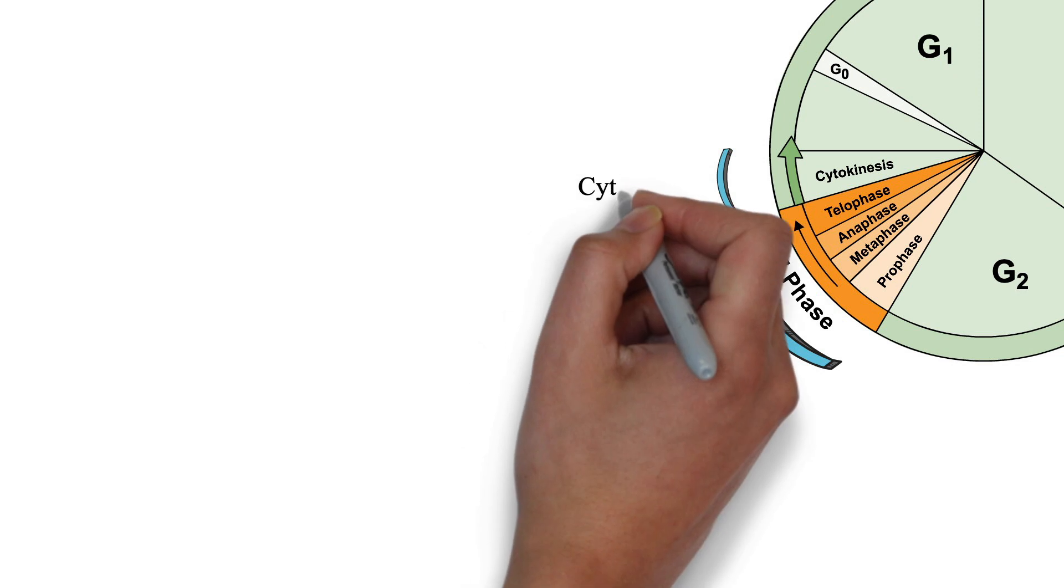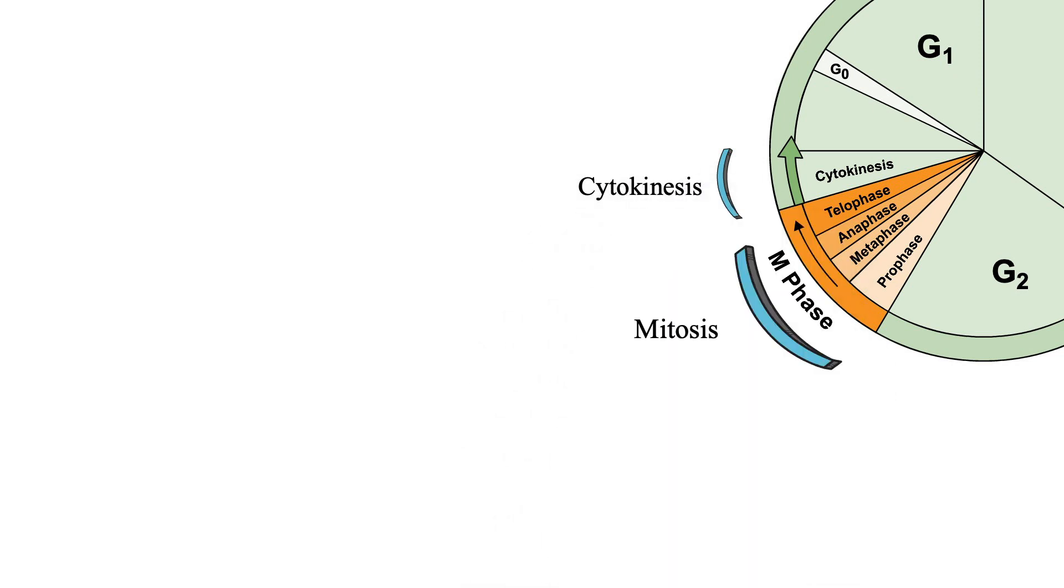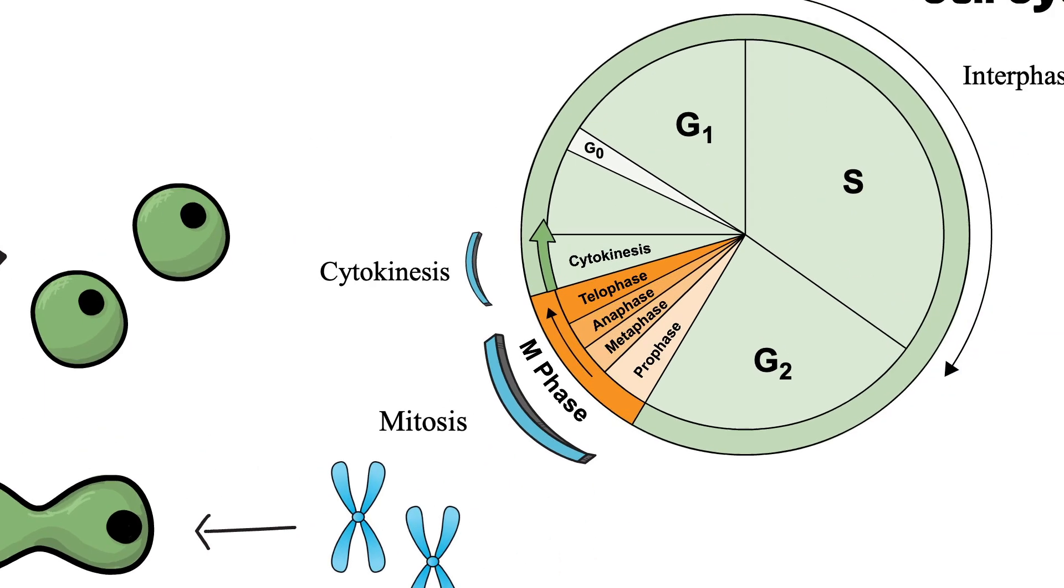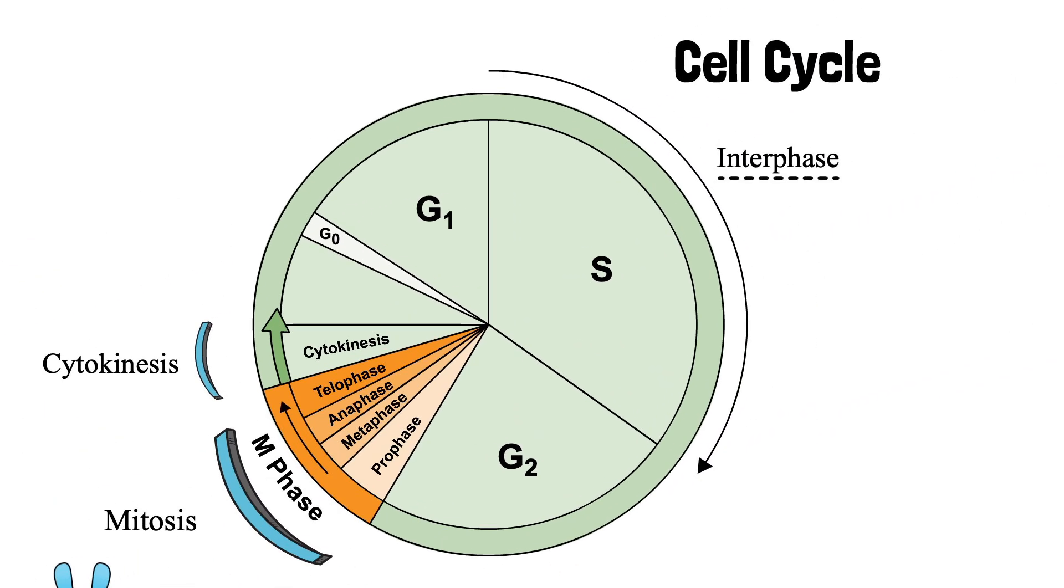During mitosis, duplicated chromosomes are separated into two nuclei, while in cytokinesis, the entire cytoplasm divides into two daughter cells. So basically, mitosis causes nuclear division, and in cytokinesis, cytoplasm division occurs.